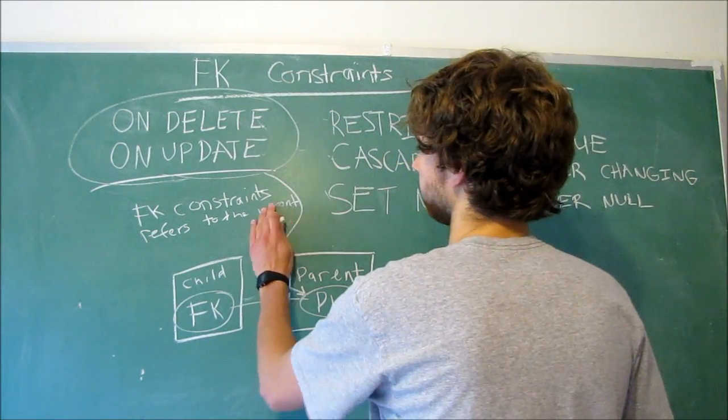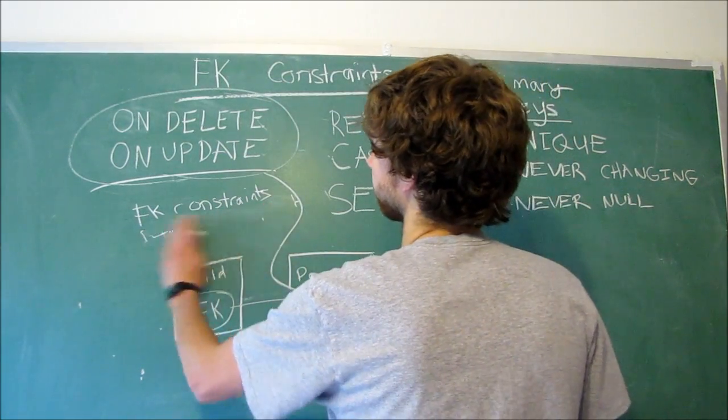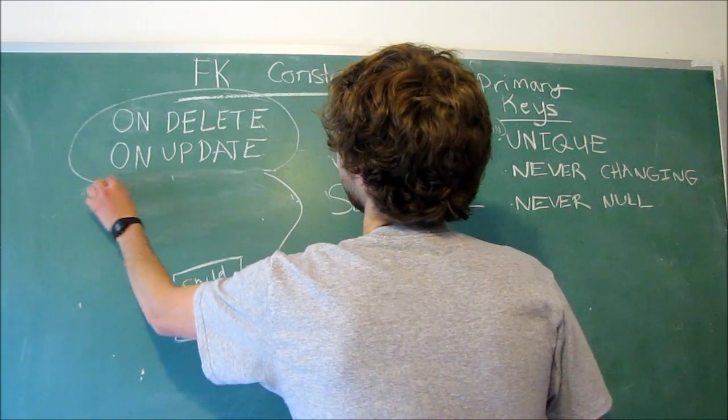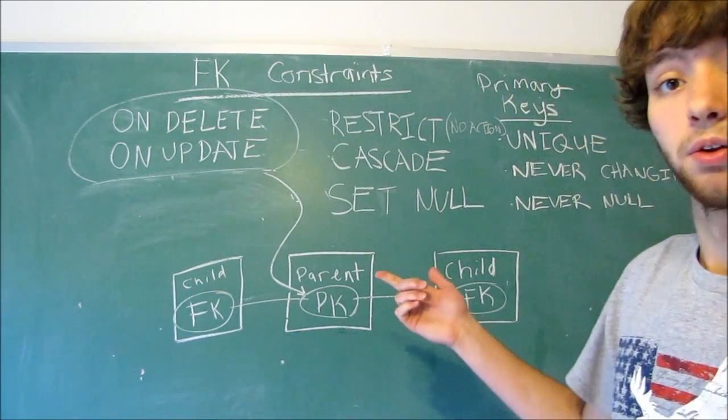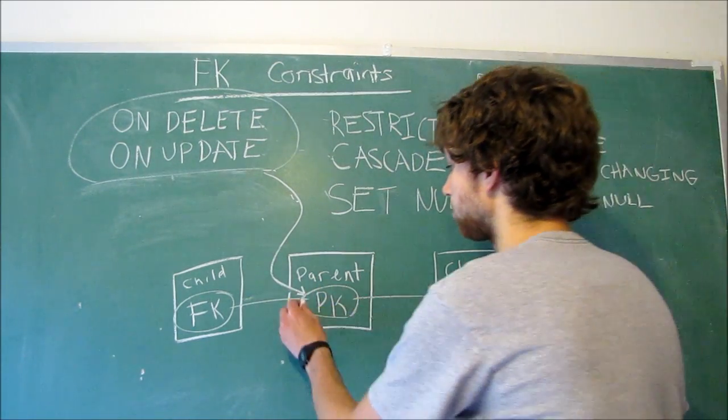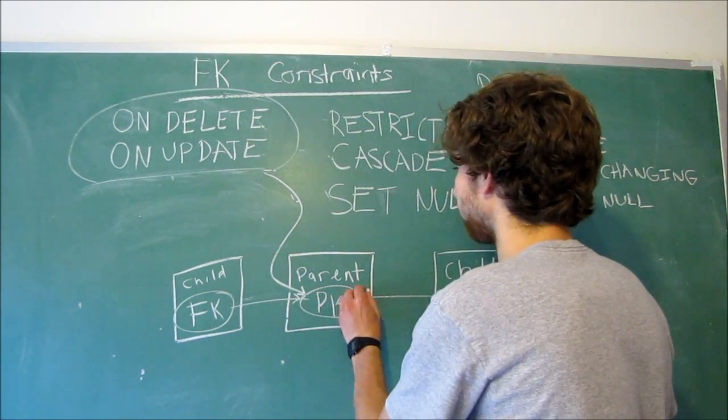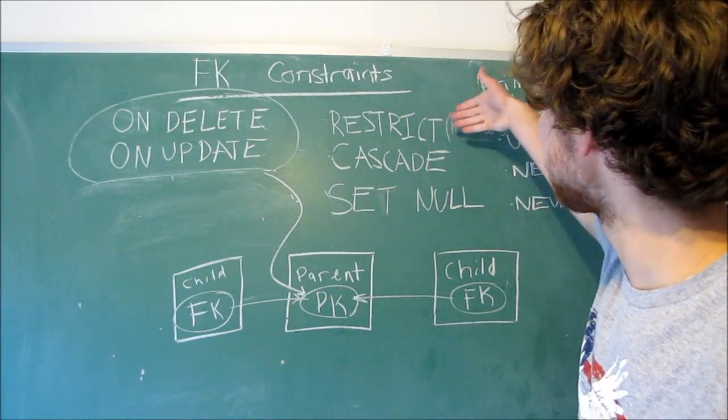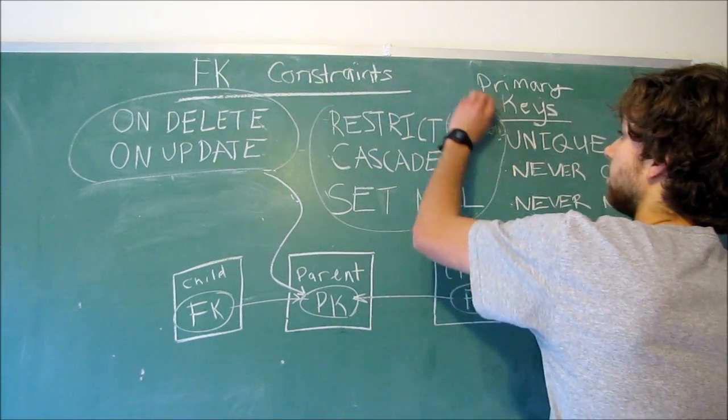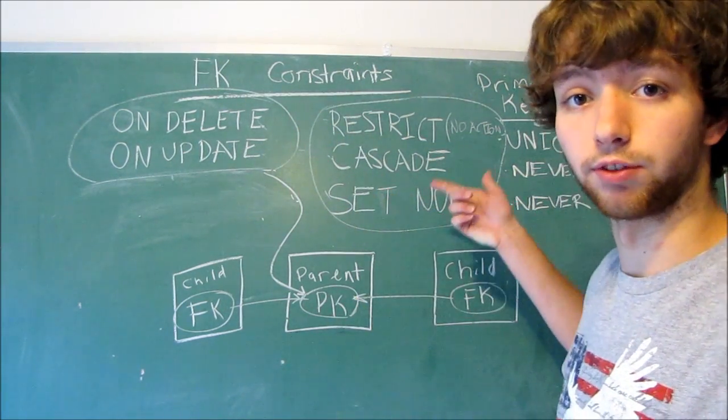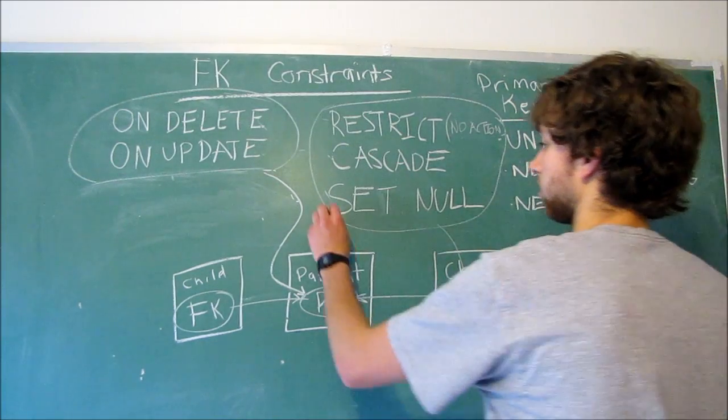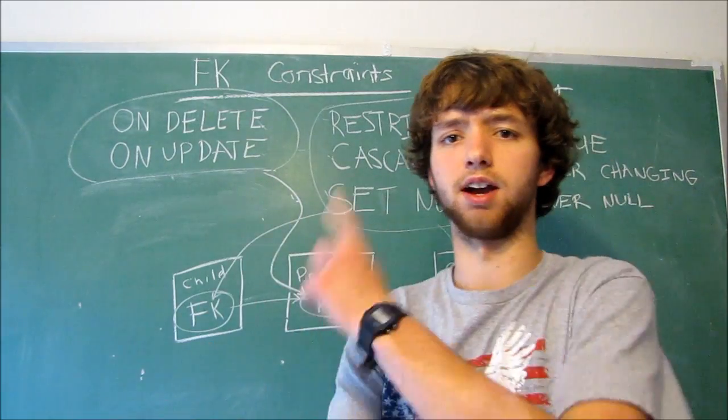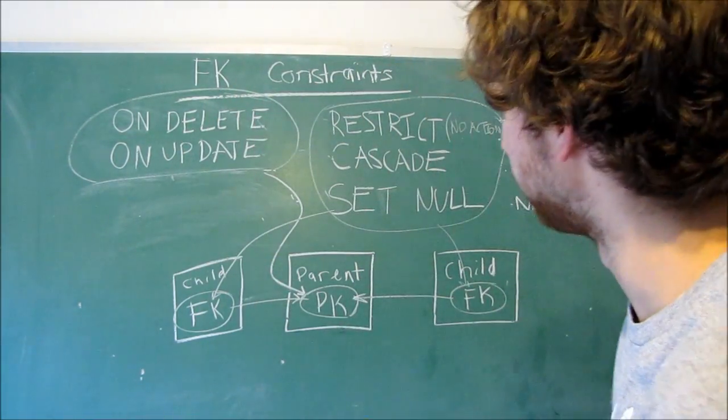Now, these values right here, these options, refer to the parent. So when we delete the parent or when we update the parent, we want the same thing to happen to the child or whatever the options are, and we'll talk about the options in a second. So that's kind of how these work. Now, just to kind of clear things up, I'm going to erase these words here, just because it's getting a little crowded, you know? I want it to be peaceful. Okay, so this is kind of how it's working. Foreign keys point back to the primary key. These options refer to what happens to the parent. Now, these options right here, these refer to what happens to the child.